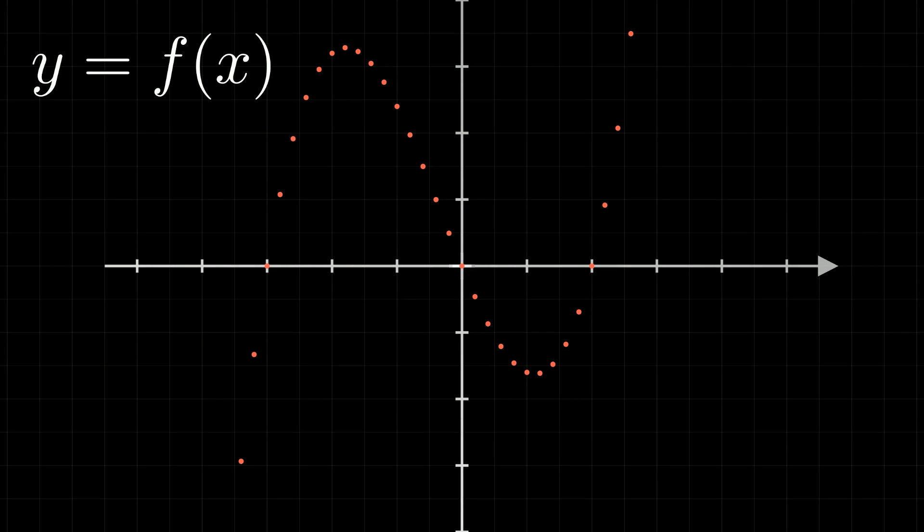If we do that for every point that the function allows us to create, the points themselves are now so numerous and so close together that it becomes more convenient to represent the function as a curve. It's important to understand that every point on this curve has an X coordinate that can be freely chosen and a Y coordinate that is the value of the computed function on the X coordinate.